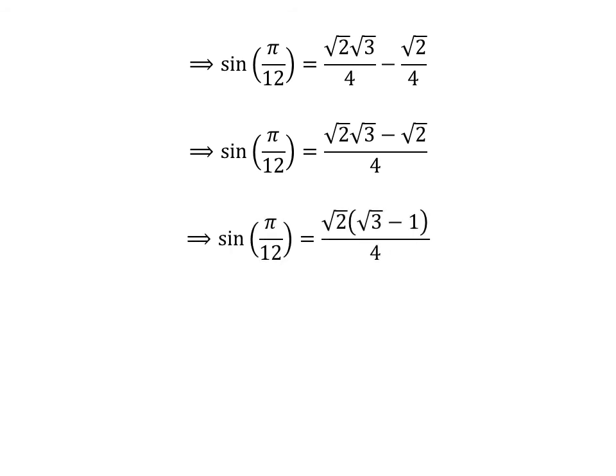Taking out the common factor square root of 2 in the numerator gives us sine of pi upon 12 is equal to square root of 2 times the quantity square root of 3 minus 1, all upon 4.